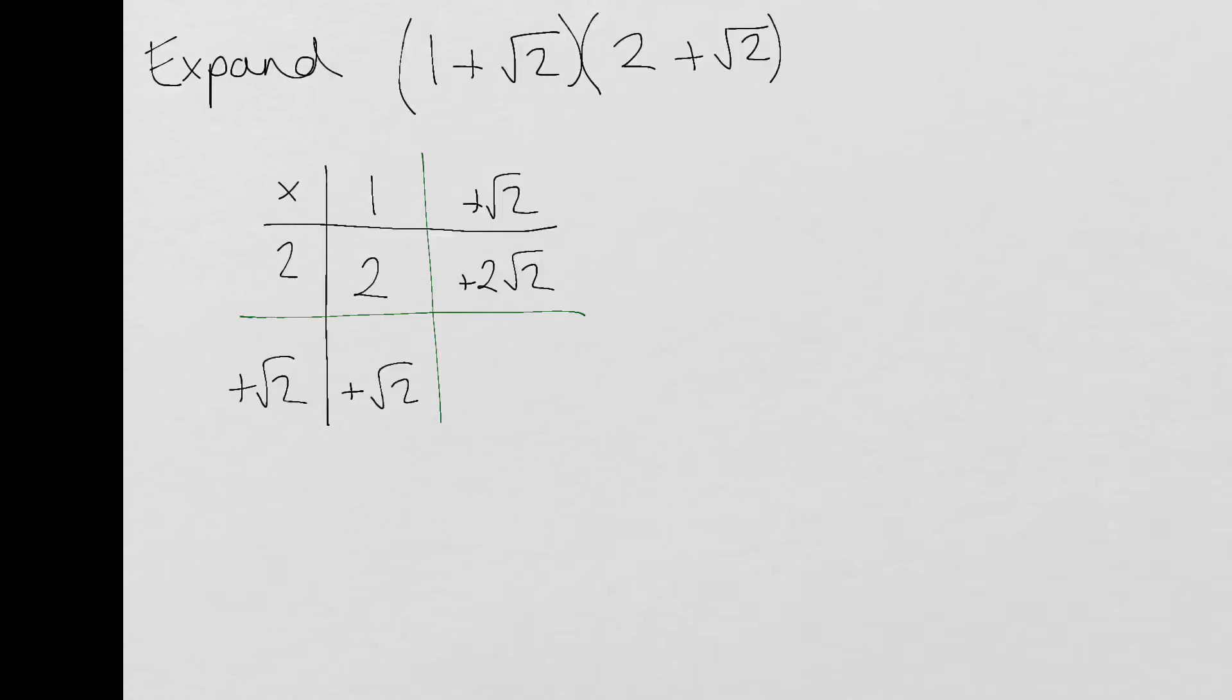And then in the final bracket you've got √2 times by √2 and if you go back to the very first video one of the first things we discussed is that that's going to give us a positive 2. So √2 squared is going to give us 2.